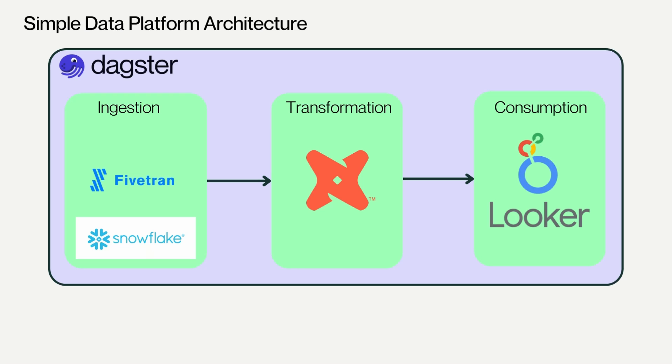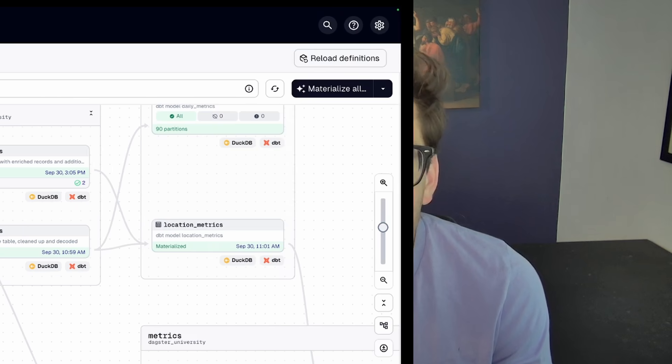Also, dbt doesn't occur in a vacuum. You have ingestion pipelines and downstream data consumption. Being able to monitor all of those things in one place is one area where Dagster really shines. Deploying dbt in Dagster also allows you to run dbt core with minimal configuration and adjustment, and you get all the benefits of Dagster while minimizing vendor lock-in and running your dbt project in a cost-effective manner.